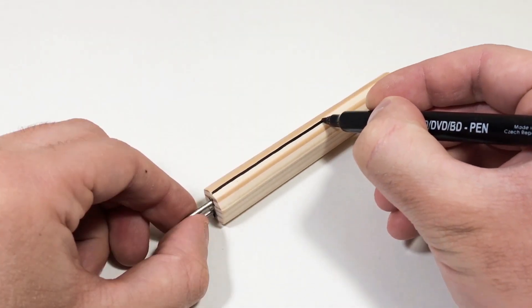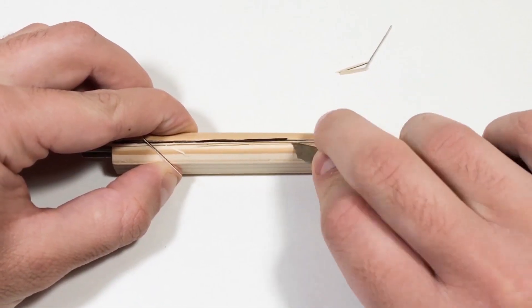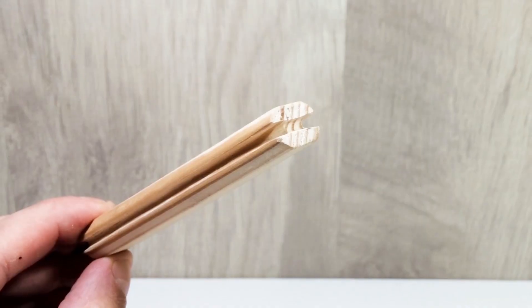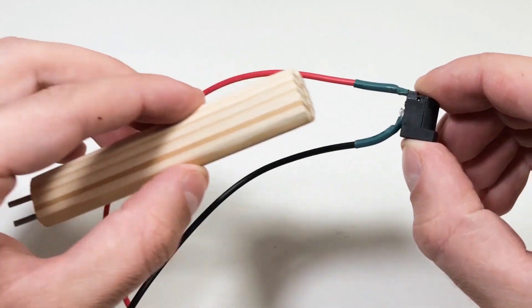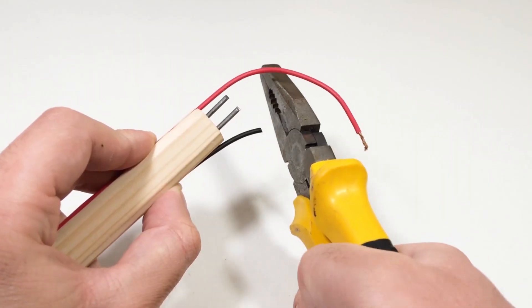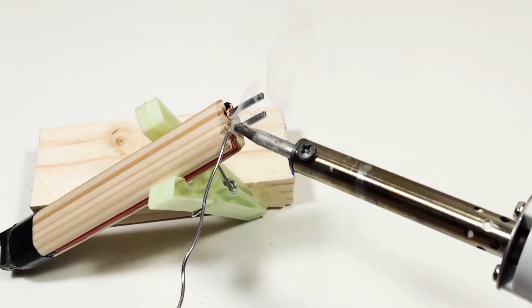Next, I carve shallow grooves along the handle and place the power wires into them. I'm using wires with a connector for a power supply, fixing them onto the handle. Then I connect the wires to the steel contacts and solder them for extra reliability.